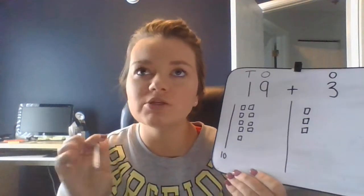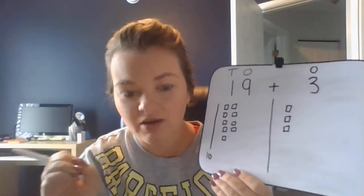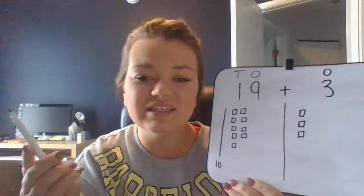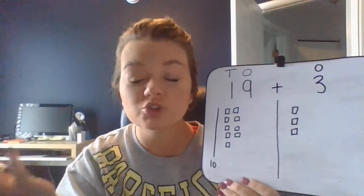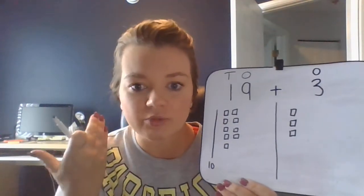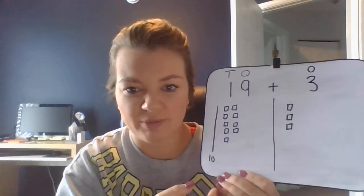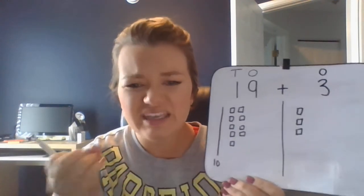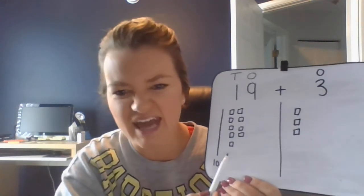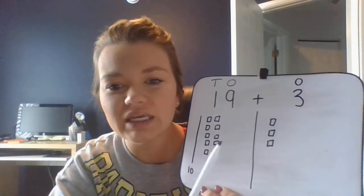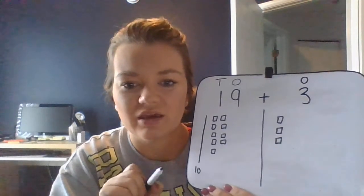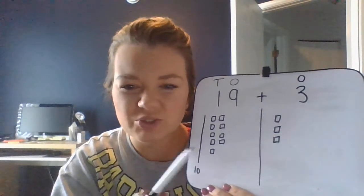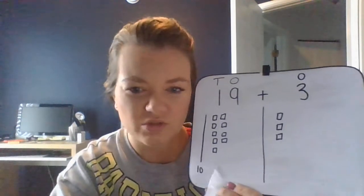So now we're going to try to make this as easy as possible for us to add. I know some of us can look at 19 plus 3 and already know the answer, but we need to keep learning different strategies because sometimes there might be a number that's super big and this strategy might help you. So here's what I want you to think about: I have a group of ten and nine ones on one side for 19, and three ones for 3 on the other side. If I asked you to make another group of ten, how do you think you would do that? Pause the video and take some think time.